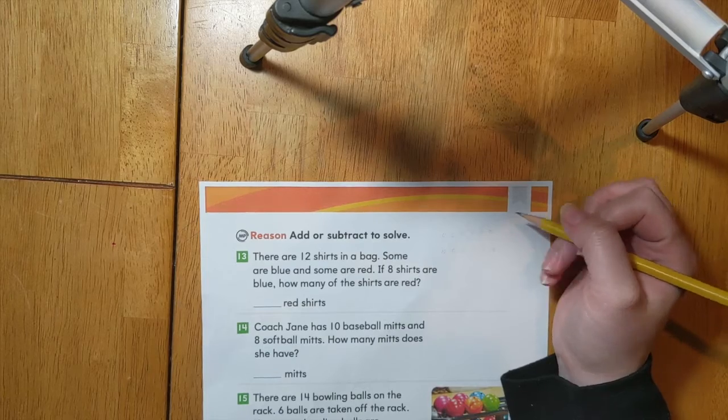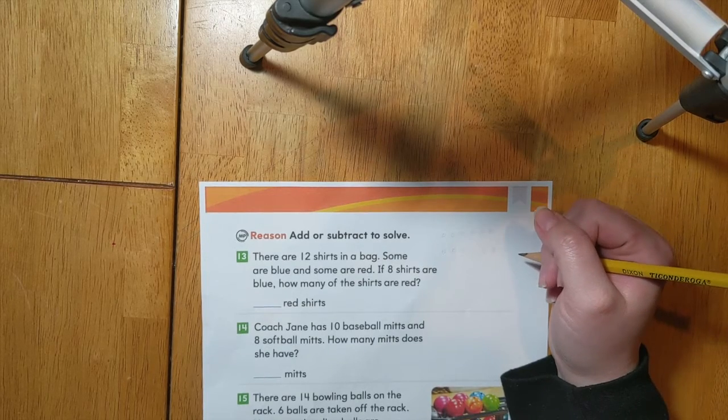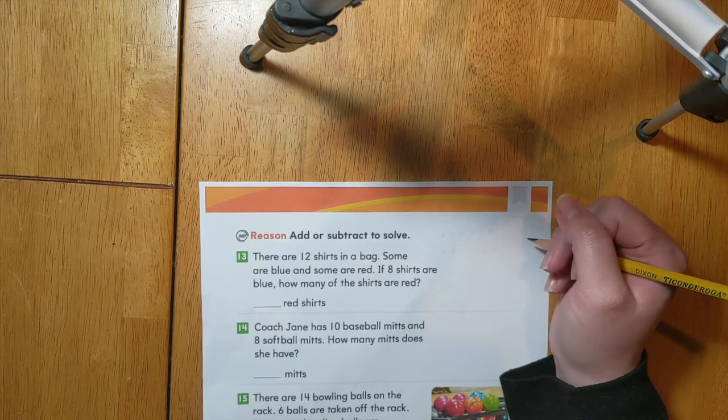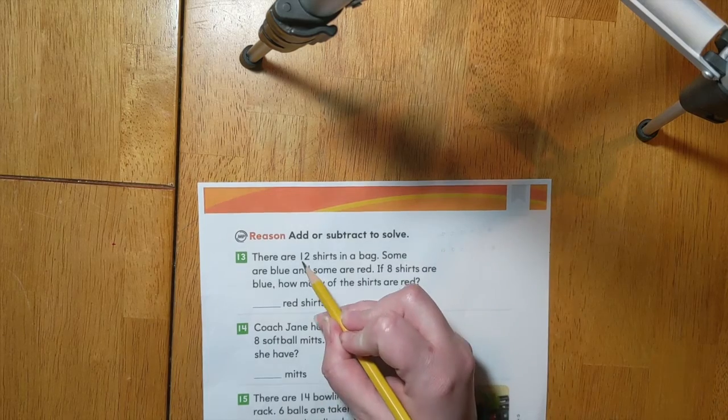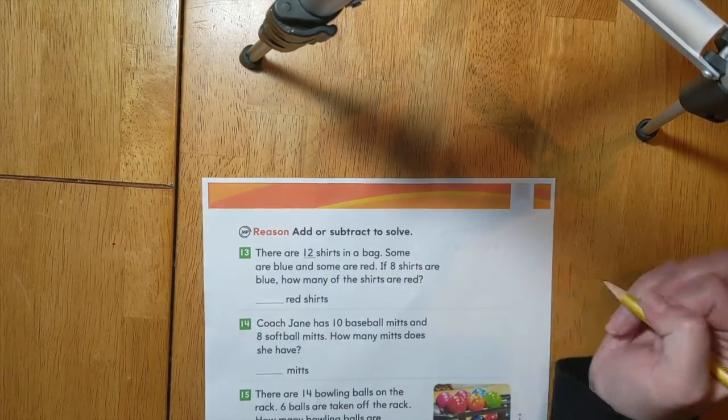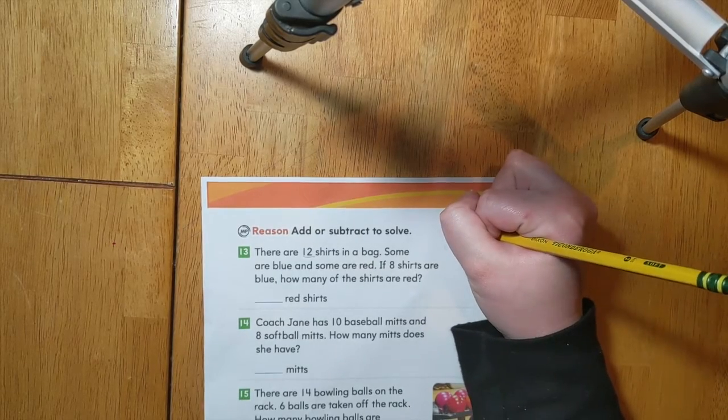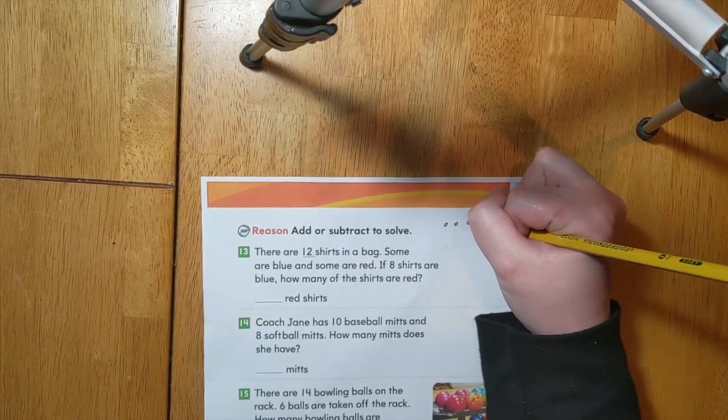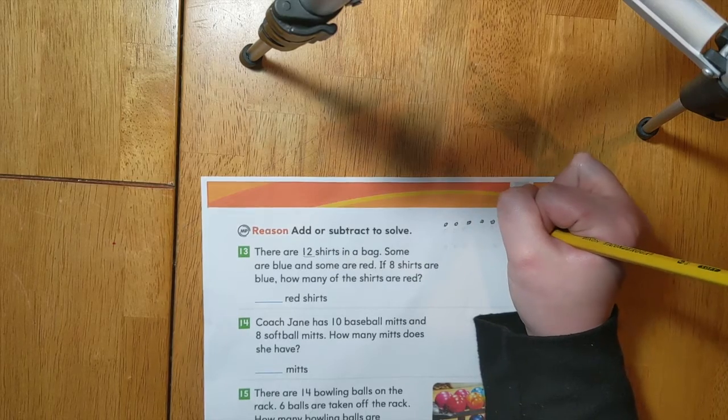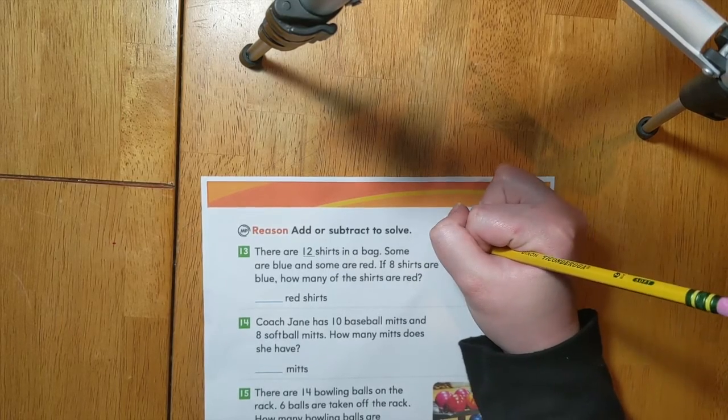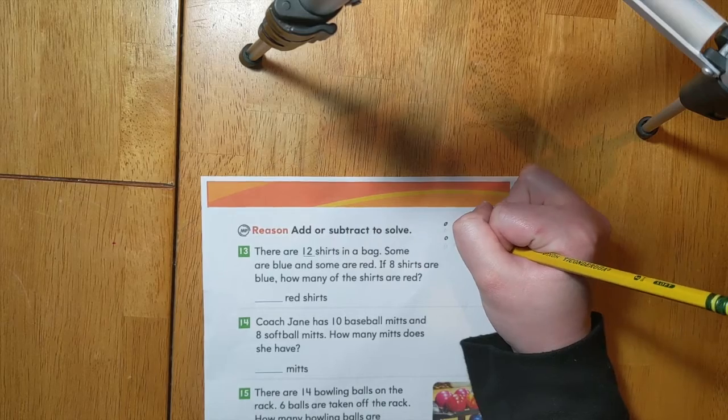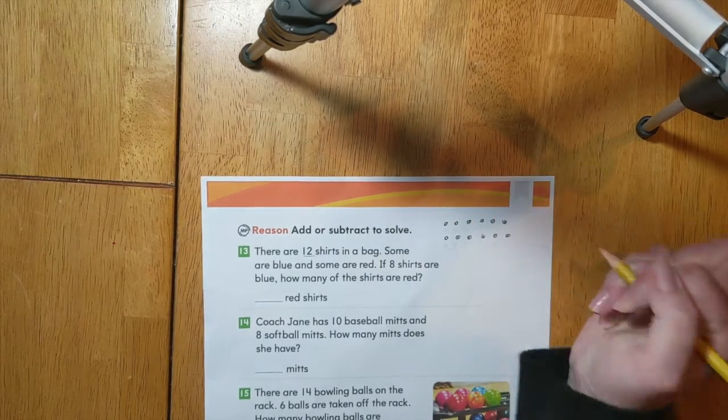What I'll do first is I'll draw how many shirts I know there are all together. We know that there are 12 shirts in the bag. So we'll draw 12 ones. 1, 2, 3, 4, 5, 6, 7, 8, 9, 10, 11, 12.